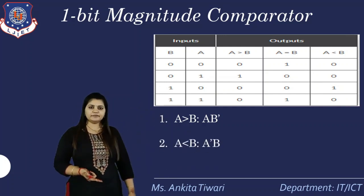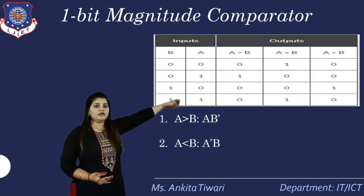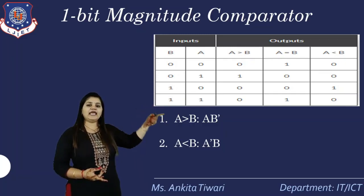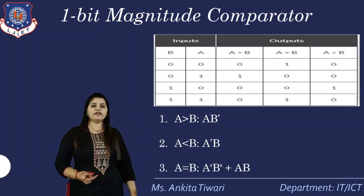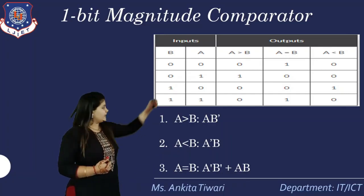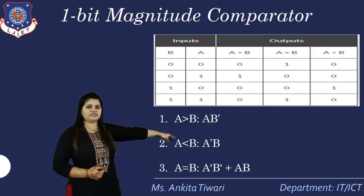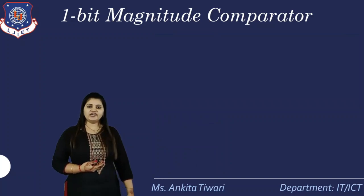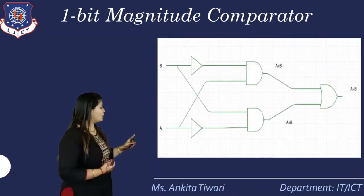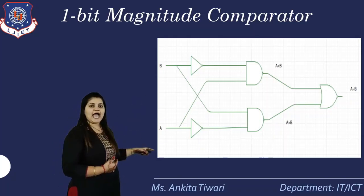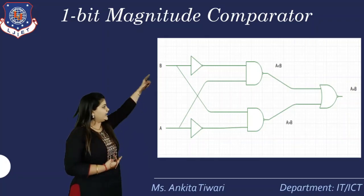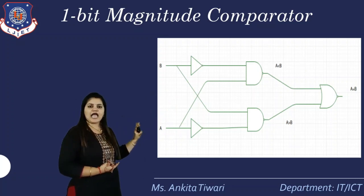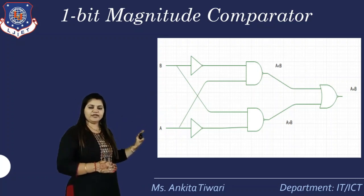For a equal to b, the output is 1 at the first and last positions — that is, when a=0,b=0 and when a=1,b=1 — giving the equation: a equal to b = Ā·B̄ + A·B. These three equations are derived from the truth table, and the corresponding logic circuit shows the two inputs producing three outputs: a greater than b, a less than b, and a equal to b. This is the circuit diagram for one-bit magnitude comparison.